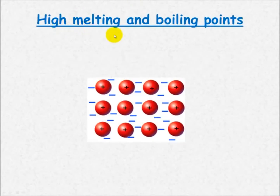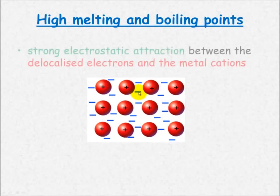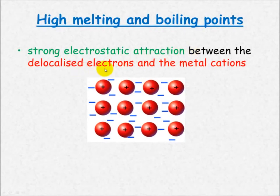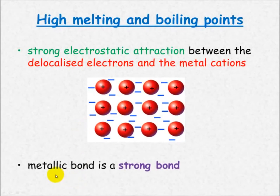Let's look at the high melting and boiling point. Here we have our positive cations and our sea of delocalized electrons. There is a very strong electrostatic attraction between positive and negative — between the delocalized electrons and the metal cations. It's almost like glue: these cations are attracted to the electrons in between, which are attracted back to the cations. This strong electrostatic attraction means that the metallic bond is a very strong bond.